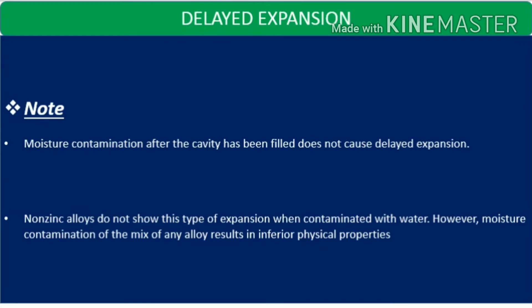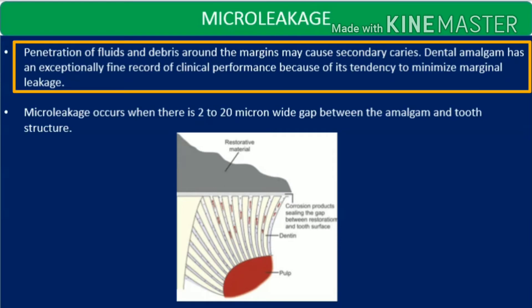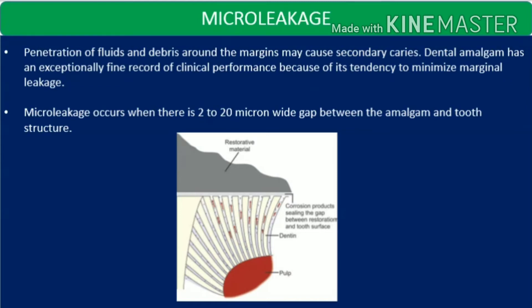High vacuum suctions should be used for good isolation of the operating field. The next property is micro leakage — basically the penetration of fluids and debris around the margins that can cause secondary caries. Dental amalgam has an exceptionally fine record of clinical performance because of its tendency to minimize micro leakage or marginal leakage. Micro leakage occurs when there is a 2 to 20 micron wide gap between the amalgam and the tooth structure.